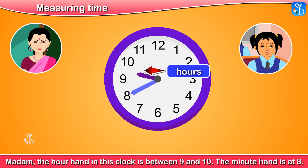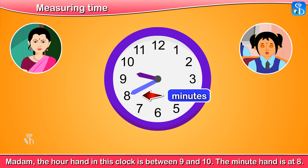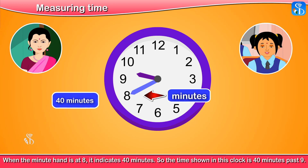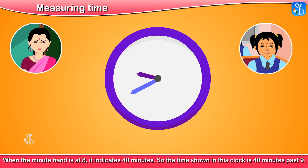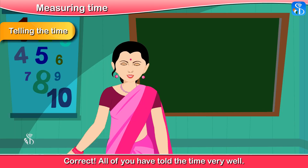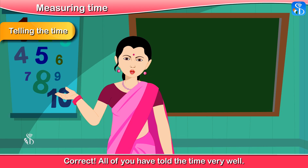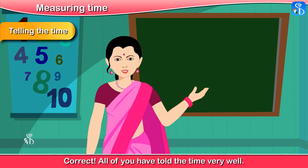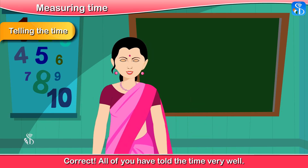Madam, the hour hand in this clock is between 9 and 10. The minute hand is at 8. When the minute hand is at 8, it indicates 40 minutes. So the time shown in this clock is 40 minutes past 9. Correct. All of you have told the time very well.